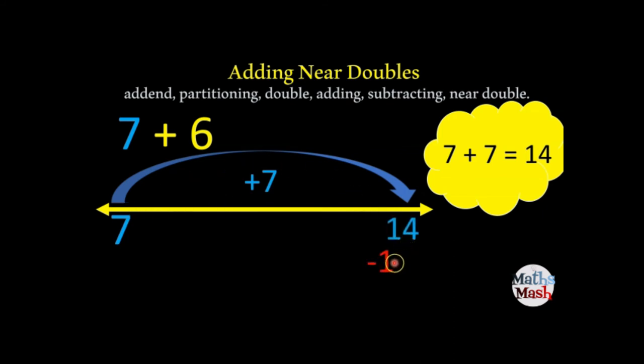But now we have to take away 1. Why? Because we're not adding 7 plus 7 really. Although we're starting with what we know, this isn't really what we're trying to get the answer to. We're trying to get the answer to 7 plus 6. And 6 is smaller than 7. So we have to take 1 away. And that gives us 13. So 7 plus 6 is 13.